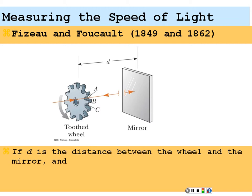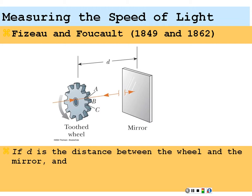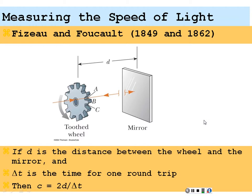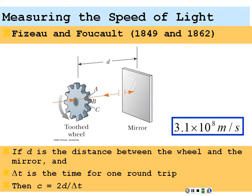Based on this measurement of the round-trip time — twice the distance to the mirror — they came up with a value for the speed of light of 3.1 times 10 to the 8 meters per second, very close to the known value today of 3 times 10 to the 8 meters per second. Excellent experimental apparatus, modified over the years to make it even more accurate.